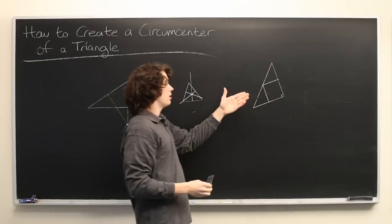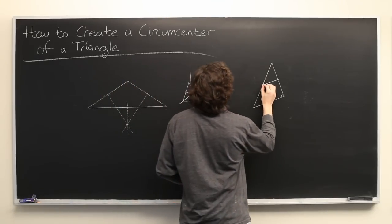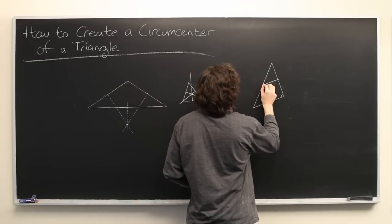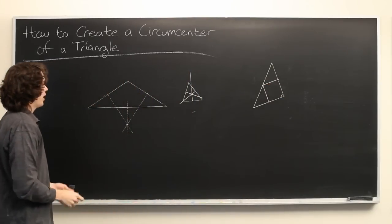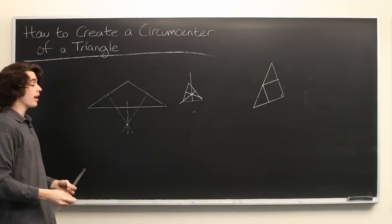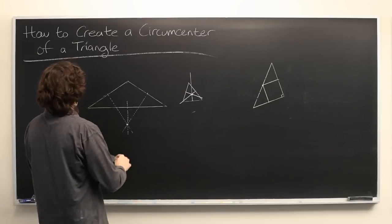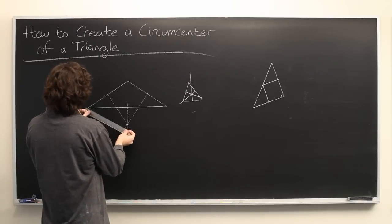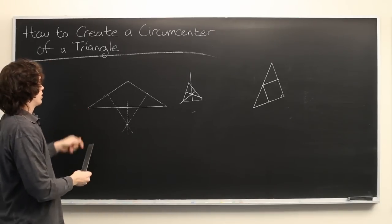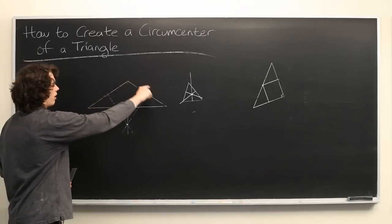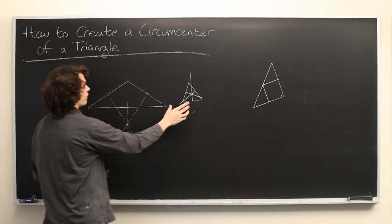We don't even need to draw another right angle here because it already intersects the hypotenuse, as we predicted since this is a right triangle. Once you've found your circumcenter, what you can do is simply measure the distance from the circumcenter to one of your vertices, and that will be the radius of a circle that hits all three of your vertices.